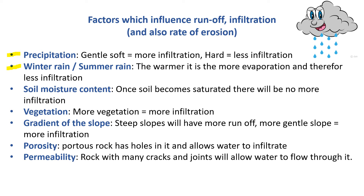Winter or summer rain is also more to do with temperature than the actual season — obviously, the hotter it is, the more evaporation there's going to be. The soil moisture content: if the soil is full, it won't absorb any more. Vegetation — always refer to natural vegetation when asked about this, but any vegetation is better than nothing. Gradient of the slope: a steep slope means water is going to run off quickly; a gentle slope, not so much. Porosity — this is SpongeBob SquarePants at his best — holes in the rocks, can the water go in? And then finally, permeability: can the water actually flow through the rocks?